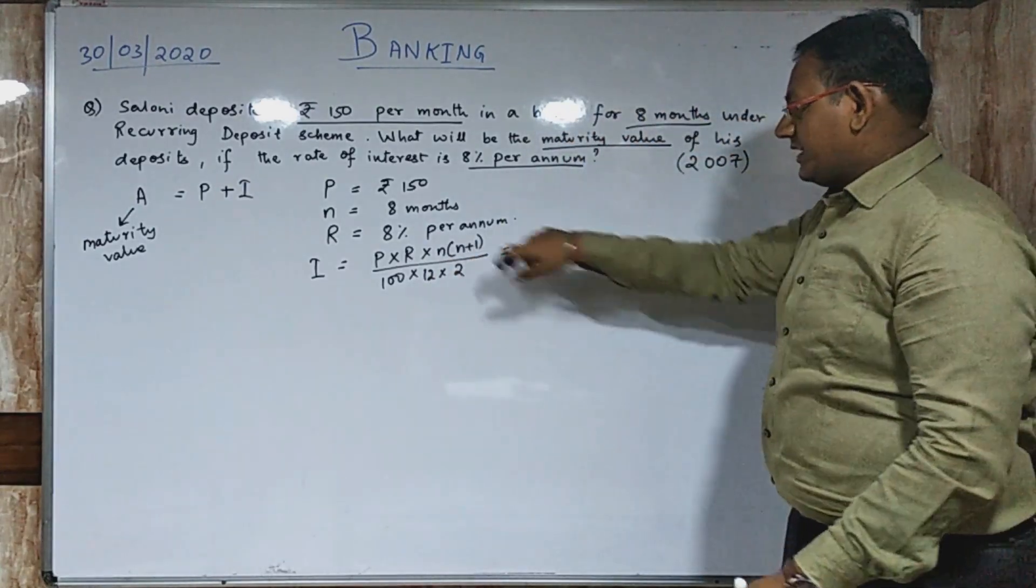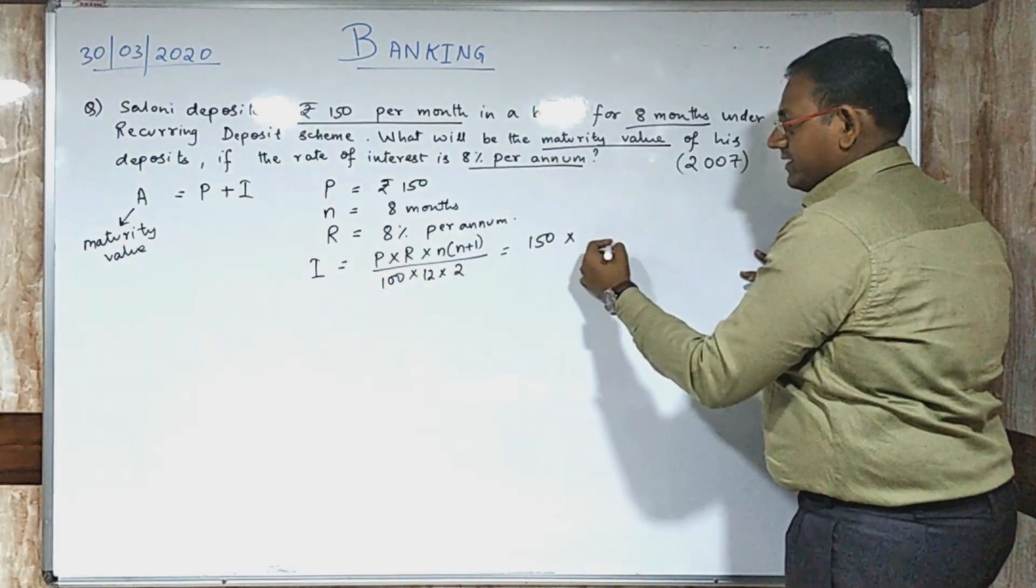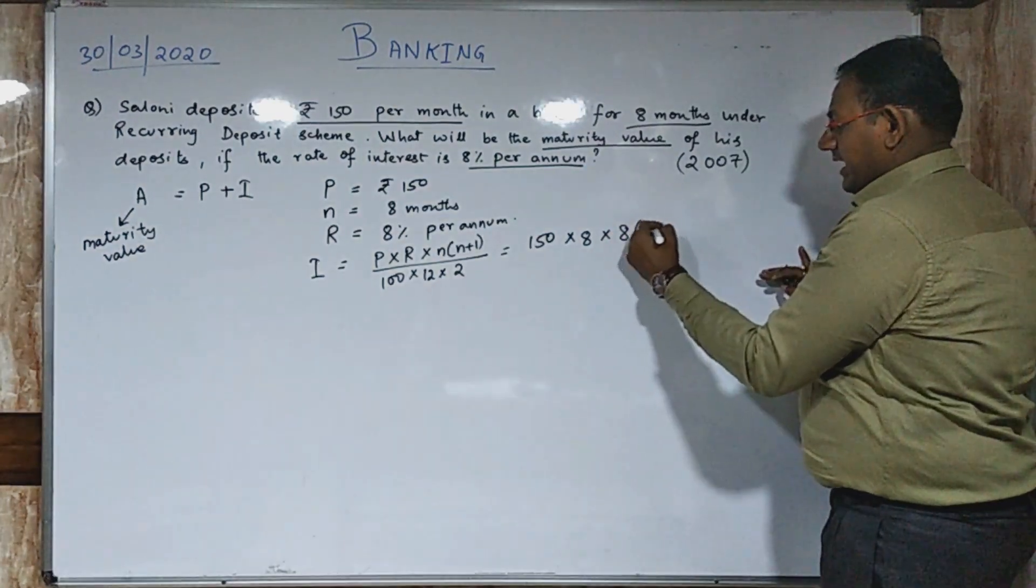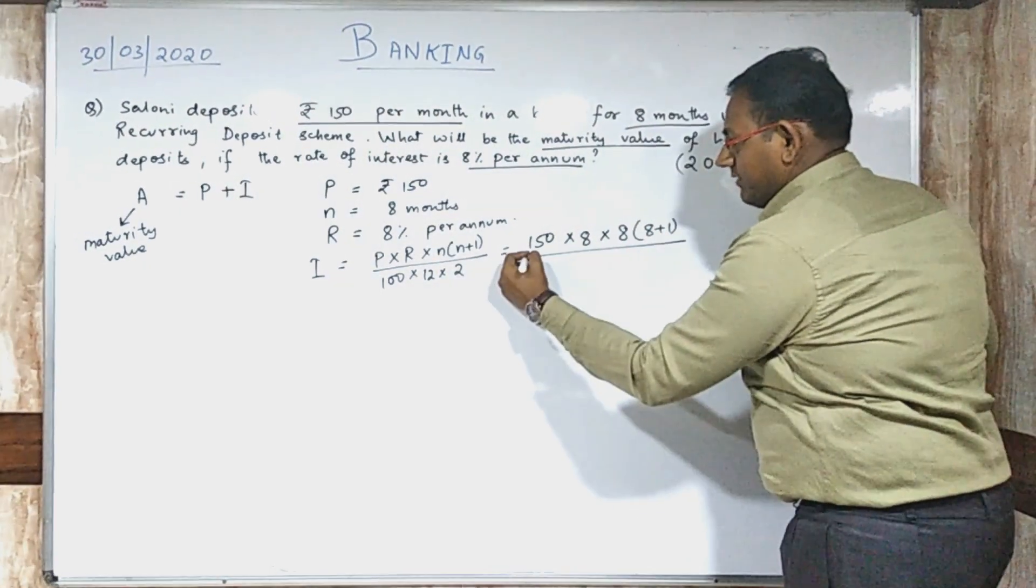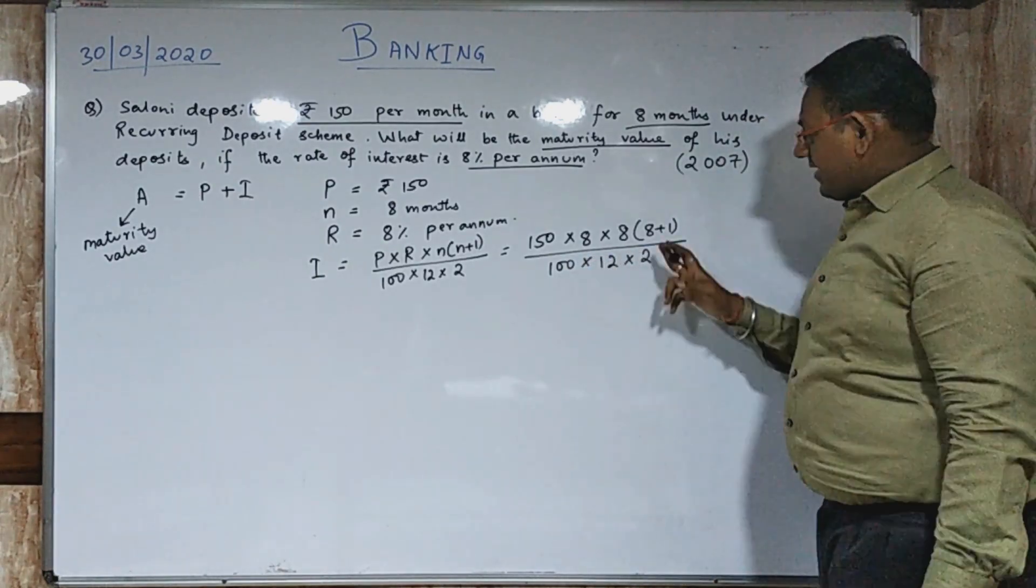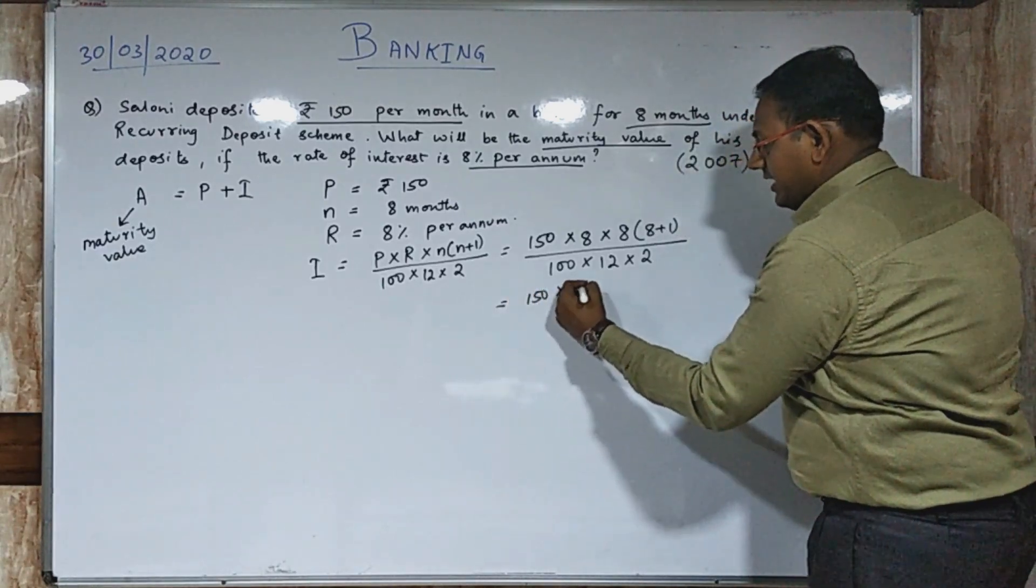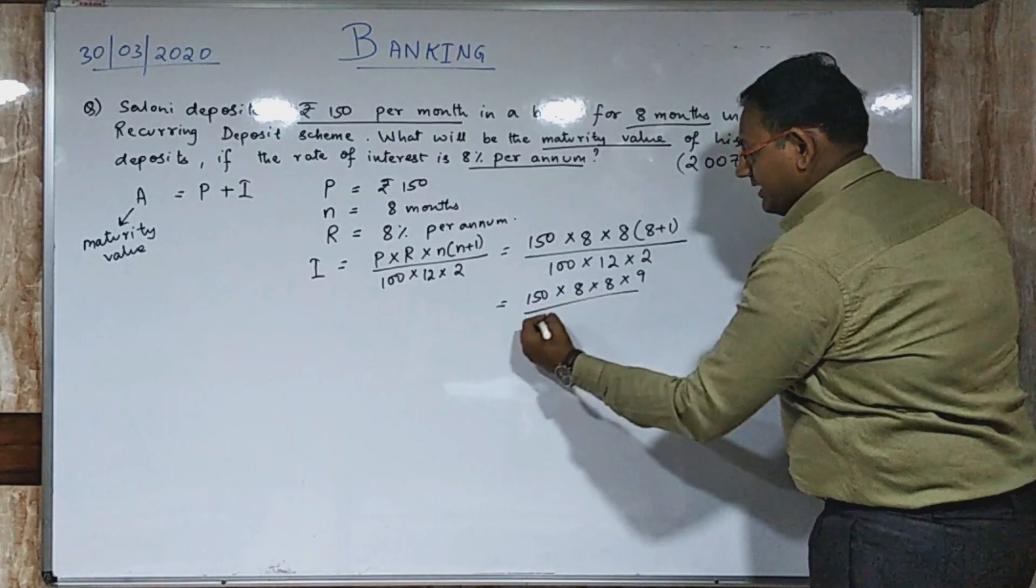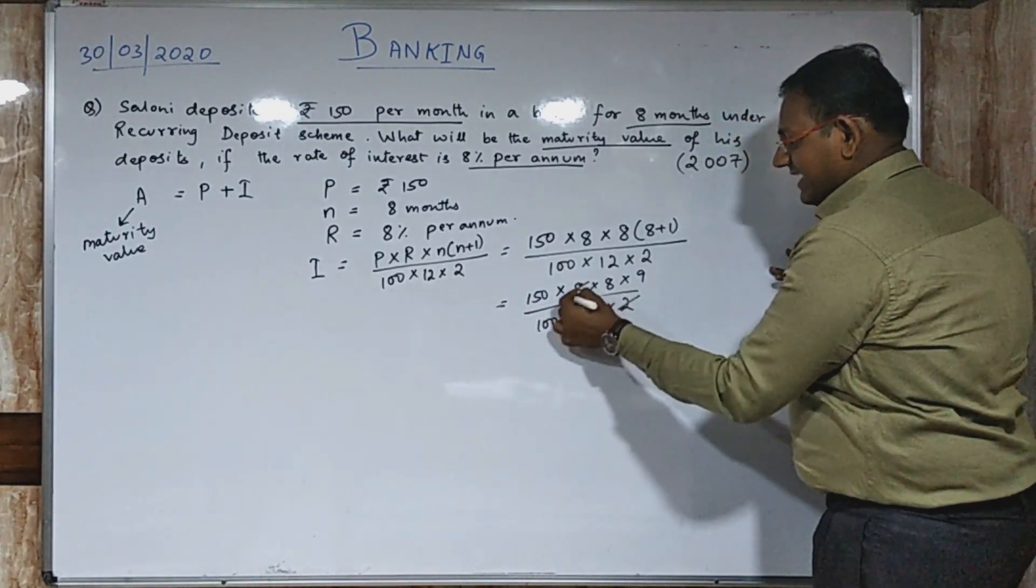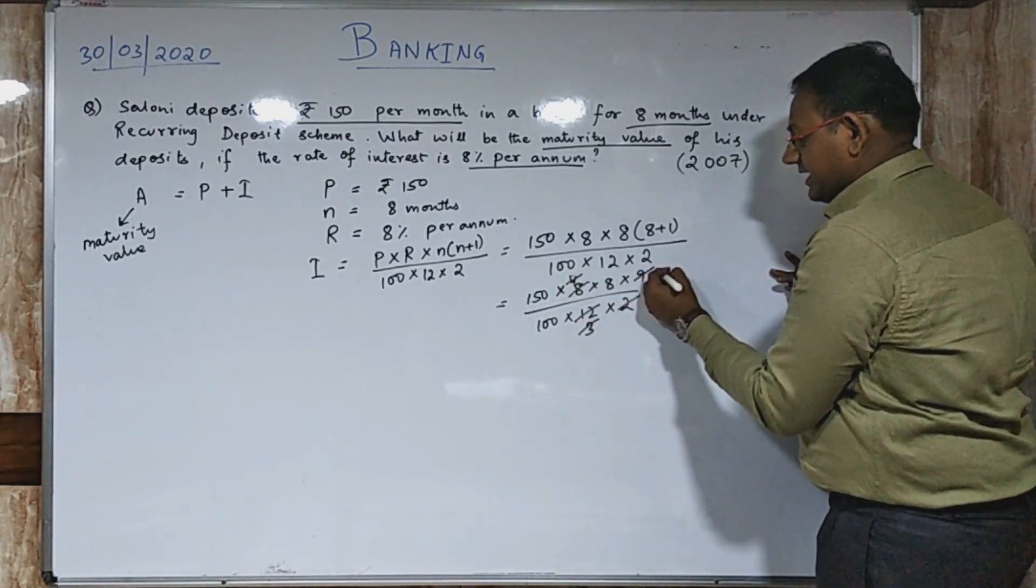Let us calculate the interest first. We know the formula: interest is P times rate of interest times N times (N+1) divided by 100 times 12 times 2. We know the principle is 150, the rate is 8%, and the time is 8. So it is 150 times 8 times 8 times 9 divided by 100 times 12 times 2.